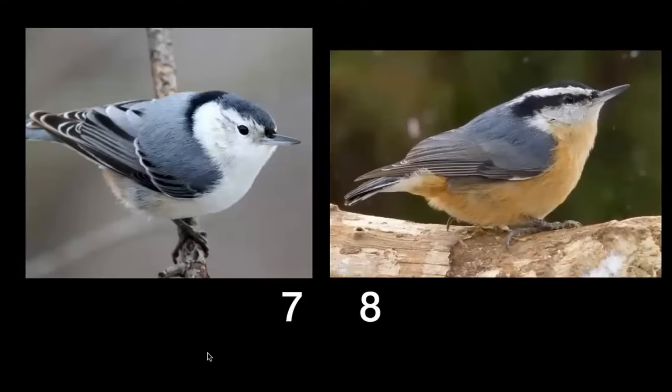Numbers seven and eight are both Nuthatches — which one is the White-breasted Nuthatch and which is the Red-breasted Nuthatch? That should be easy — just look at the breast.